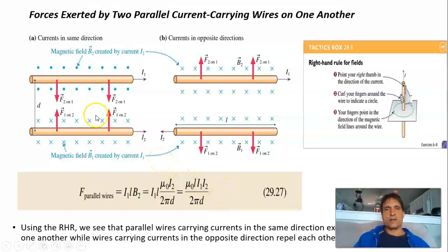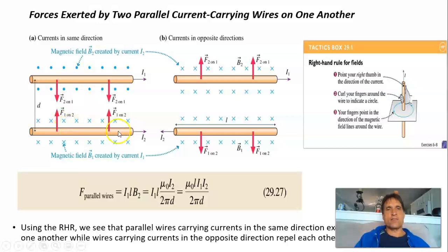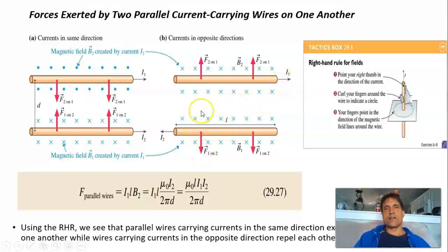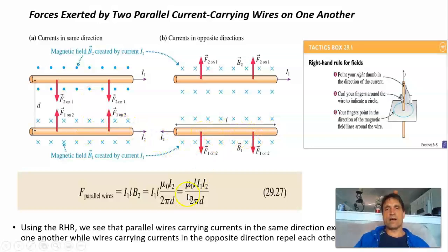By Newton's third law, the force on wire two due to wire one has the same magnitude but opposite sign. You can verify using the right-hand rule that the magnetic field at wire two due to wire one points into the screen, giving rise to a force on wire two that is upward — also attractive. So the result is: if the currents are in the same direction, the two wires attract one another. If the currents are in opposite directions, the wires repel. The magnitude of the force in both cases is F = μ₀I₁I₂L / (2πd), depending on the product of the currents, the length of the wire, and the distance d.